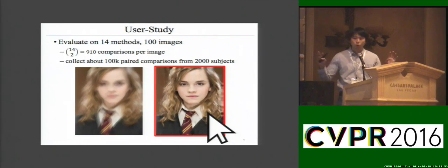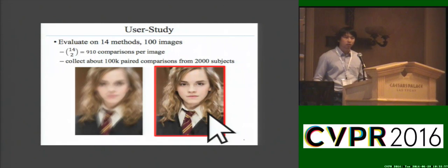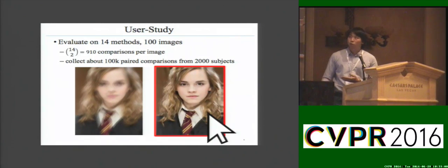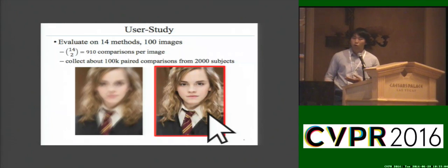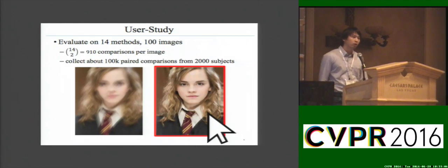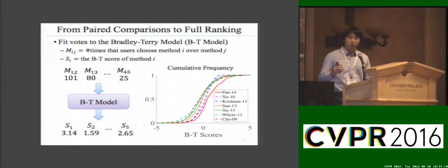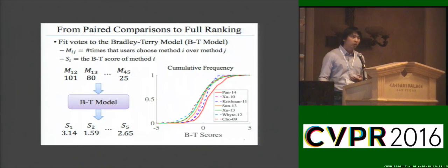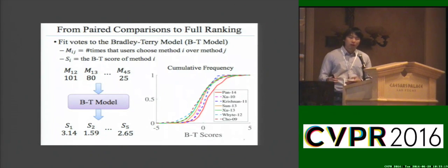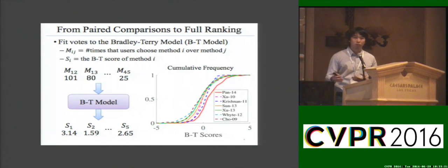In our user study, we show two images side-by-side and ask users to select which one looks better. We evaluate a total of 14 methods on 100 blurred images, and we collect user votes from around 2000 human subjects on Amazon Mechanical Turk. To obtain the full ranking, we need to convert the pairwise comparisons to a real value score. So we use the Bradley-Terry model to convert the user votes to the BT score, and we can get the full ranking of each method from the cumulative frequency of the BT score.